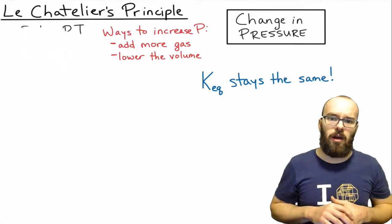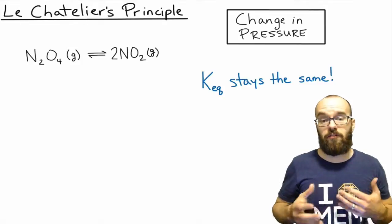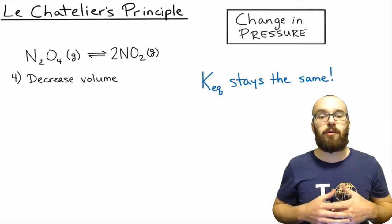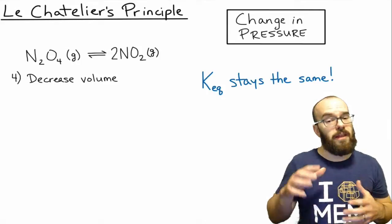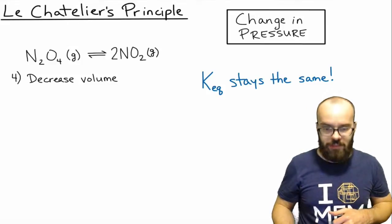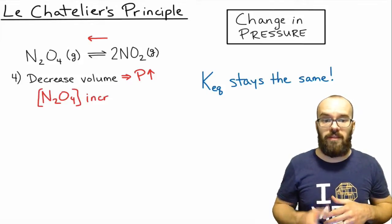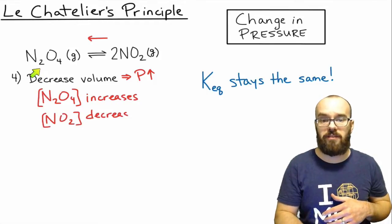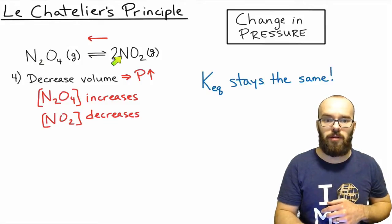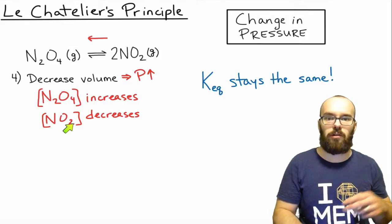Let's look at another reaction as some practice. In this case, we've got dinitrogen tetroxide, and it's going to form an equilibrium with nitrogen dioxide. What happens if we were to decrease the volume? Think about it — if we decrease the volume, that's going to increase the pressure. And if we increase the pressure, that's going to shift this reaction to wherever there's the fewest number of moles. In this case, there's the fewest number of moles on the left side — just one mole of reactants for every two moles of product produced. So dinitrogen tetroxide is going to increase, and the nitrogen dioxide will decrease.